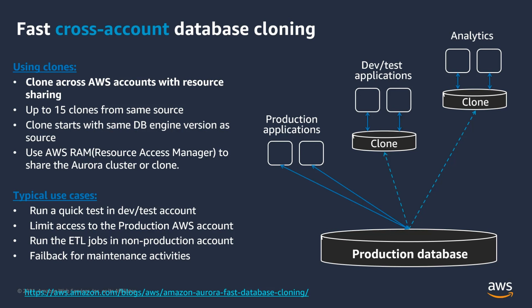Another use case for Aurora clones is if you want to make changes or perform maintenance tasks on your production database — you can create a fast clone as your fallback plan. If something fails on your production database, you can switch to the clone cluster.